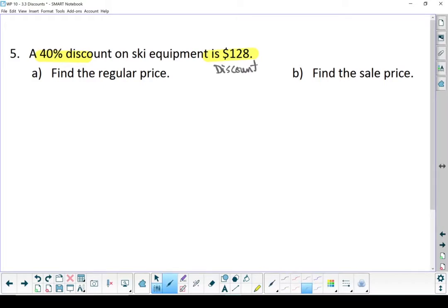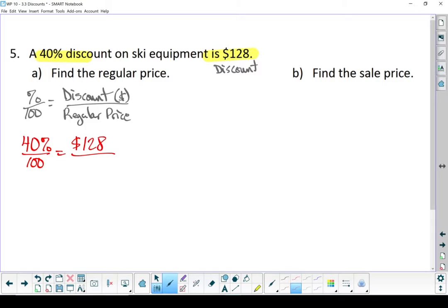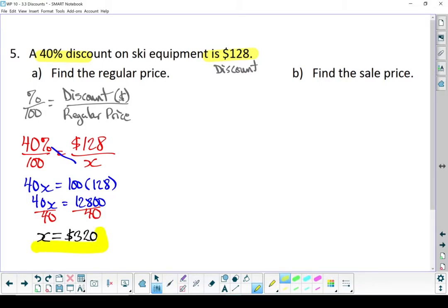Write our formula down and let's put our numbers where they belong. The piece we don't know in this case is what is the regular price. Let's cross multiply. Divide both sides by 40. Our regular price is $320 for that set of ski equipment.